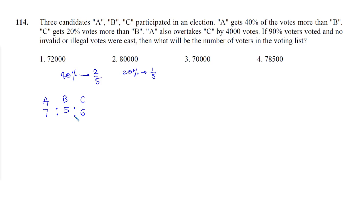Now it is given that A also overtakes C by 4000 votes, means the difference between votes of A and C is 4000. So the difference between A and C is one. This one represents 4000. So total is A plus B plus C, total is 7 plus 5 plus 6, this total is going to be 18. If one represents 4000, this 18 represents 18 into 4000, that is equal to 72000.